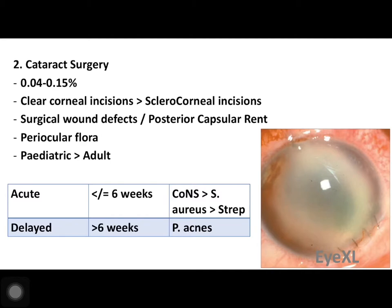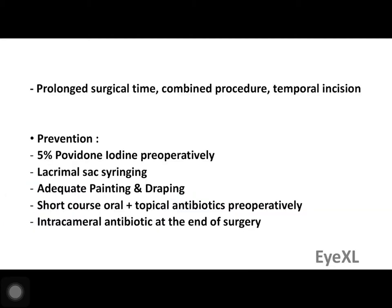Classically, acute and delayed endophthalmitis are described. Acute endophthalmitis occurs within six weeks post-surgery; the most common organism is coagulase-negative Staphylococci, most specifically Staphylococcus epidermidis, followed by Staph aureus and then Streptococci. Delayed endophthalmitis occurs more than six weeks later, and the most classic causative organism is Propionibacterium acnes.